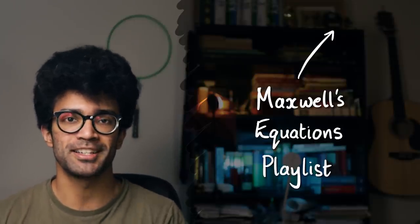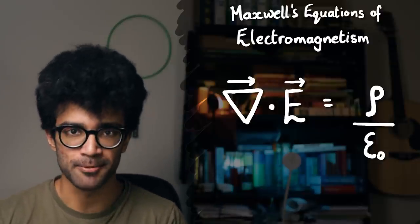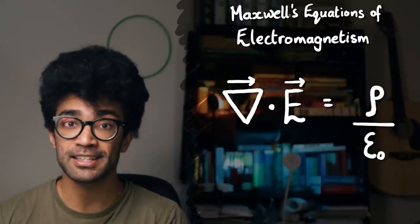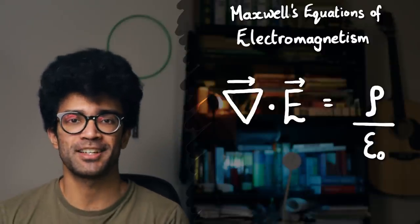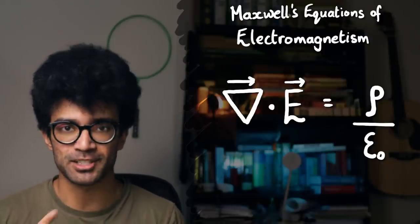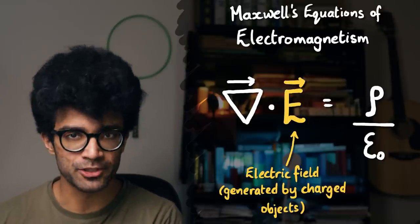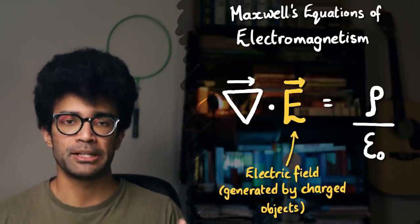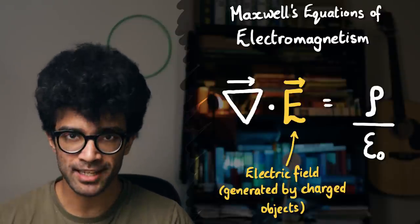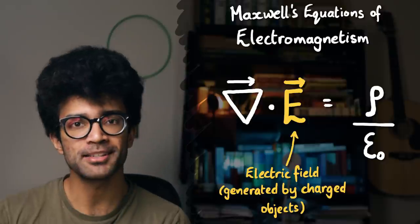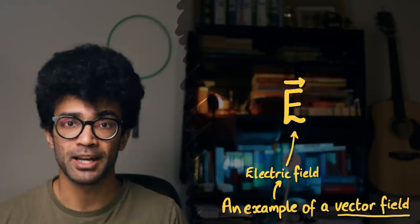In today's video we will be studying this equation here. This is one of Maxwell's equations of electromagnetism. We're going to try and understand what this equation is telling us in as intuitive and visual a way as possible — you don't need to be studying university-level maths or physics. This particular equation deals with the behaviour of electric fields.